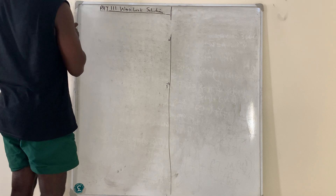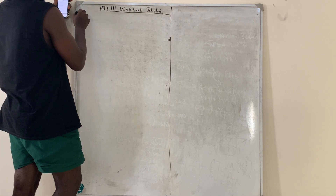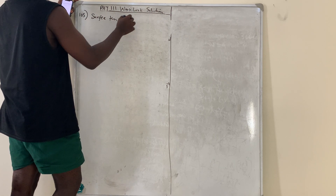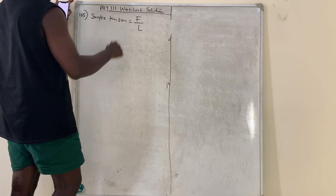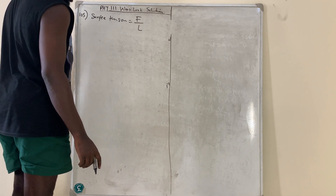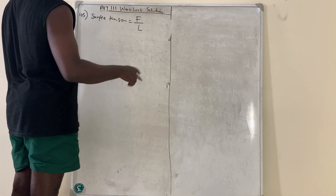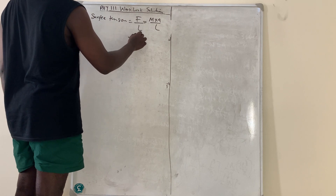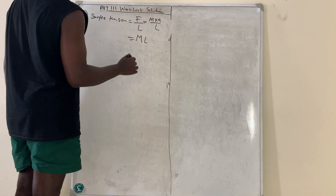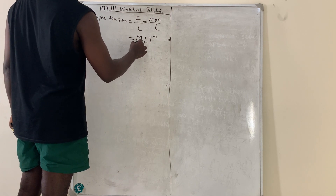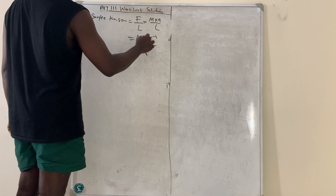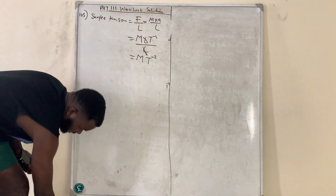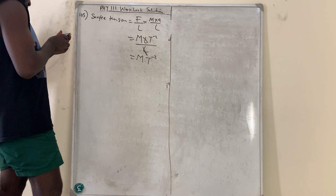Question number 105: The dimension of surface tension. Surface tension = force / length. Force = mass × acceleration. So surface tension = M × (m/s²) / m = MT⁻². Therefore, the dimension of surface tension is MT⁻².